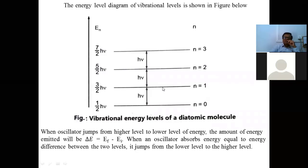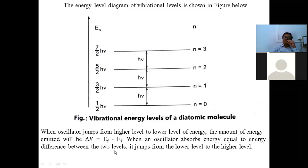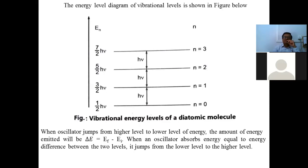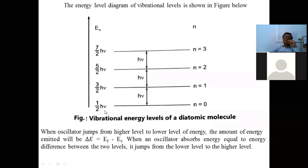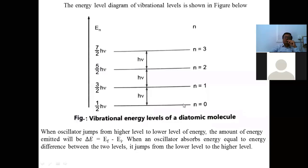When the oscillator jumps from a higher level to a lower level, energy is released. When it goes from a lower level to a higher level, energy is absorbed. The energy emitted or released is ΔE = Ef − Ei (final minus initial energy level). When an oscillator absorbs energy equal to the difference between two levels — for example between n = 0 and n = 3, the difference is (7/2)hν − (½)hν — the oscillator directly jumps to n = 3.